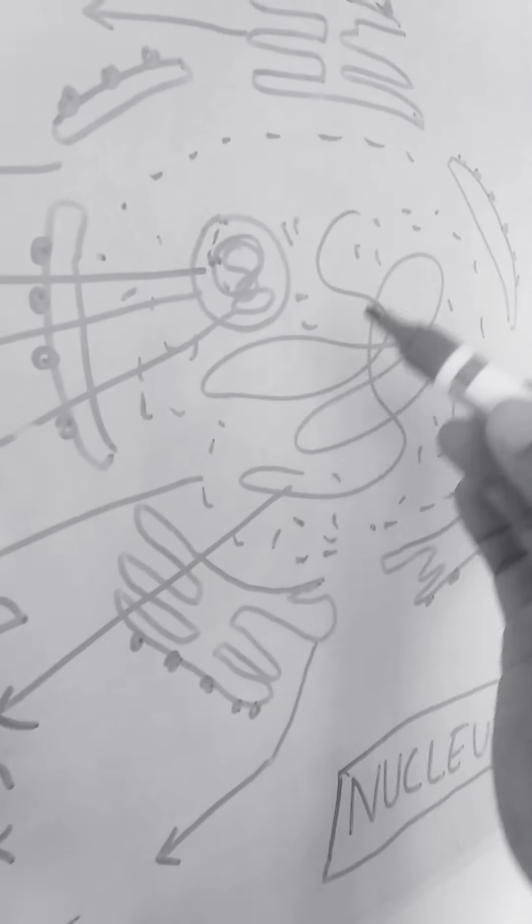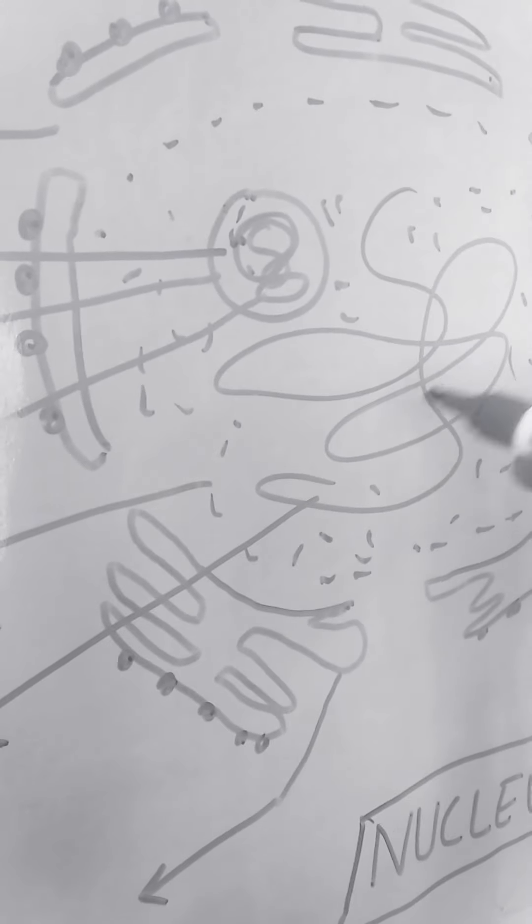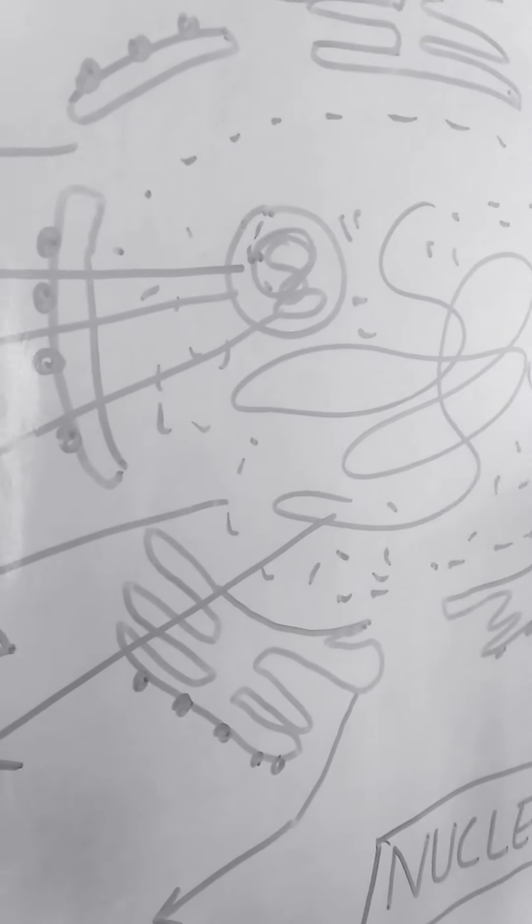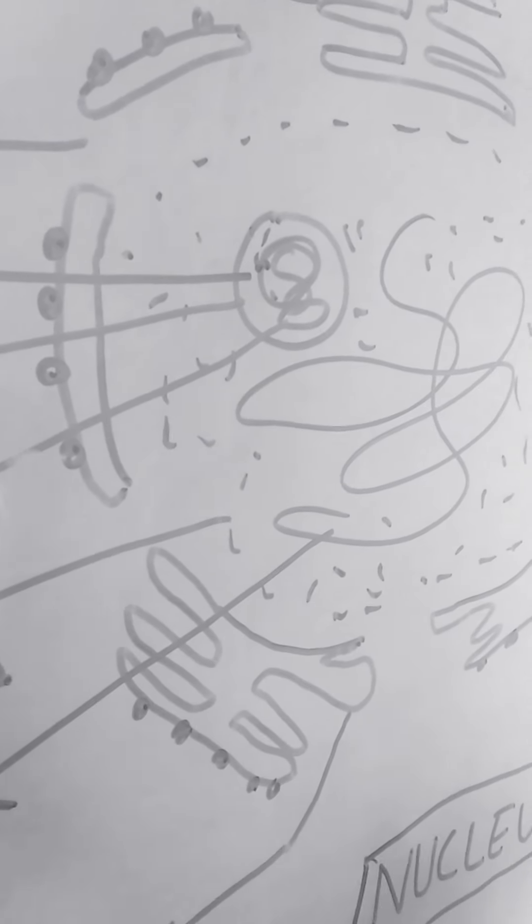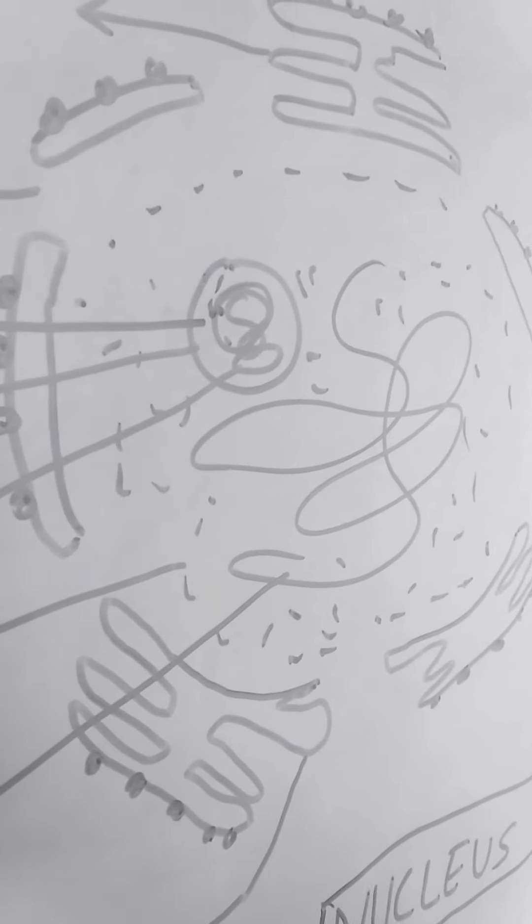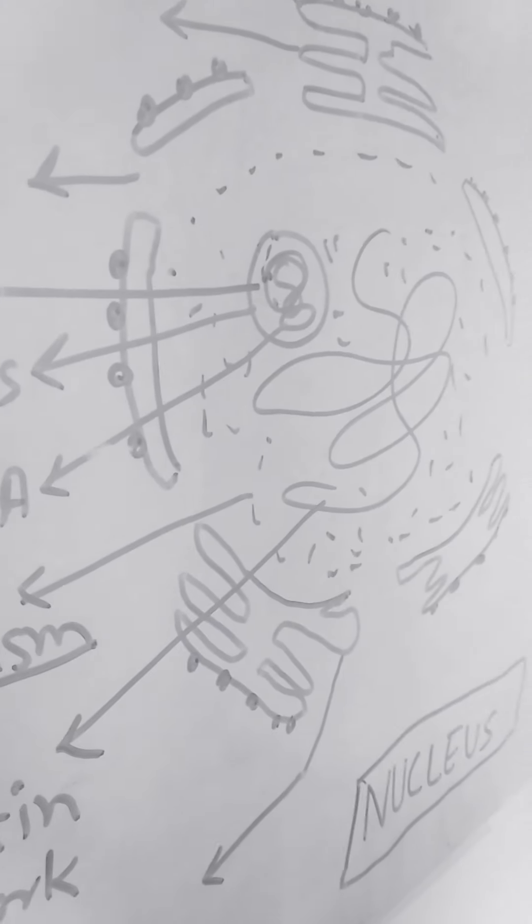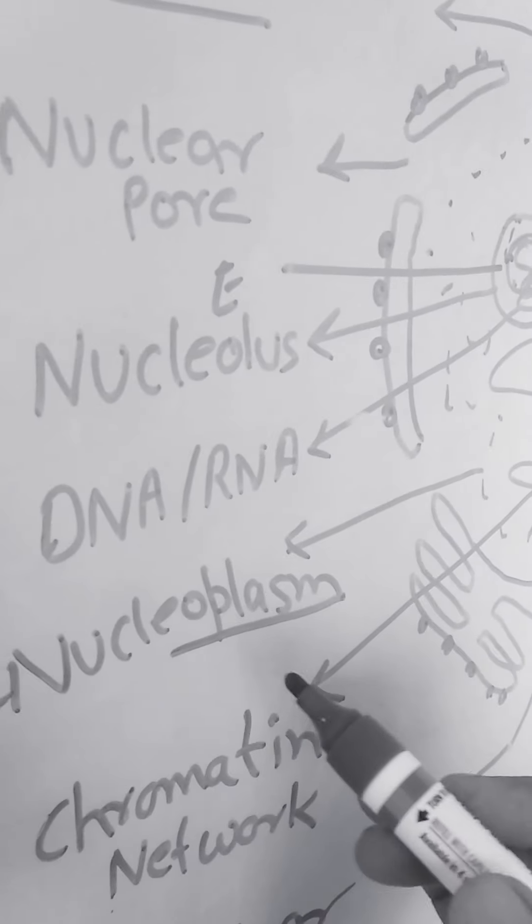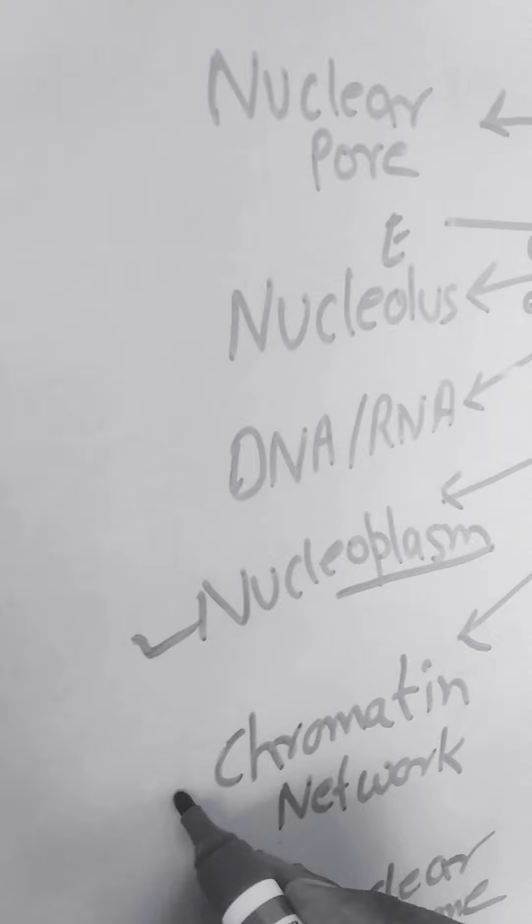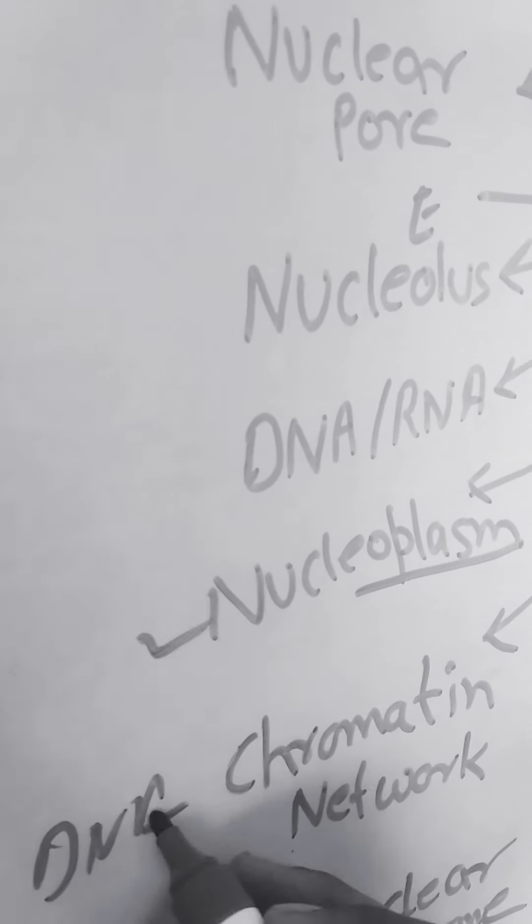Next one is chromatin network. This chromatin network is arranged in very condensed form before cell division, before nucleus division. But during the time of cell division, it becomes straightened and helps in formation of DNA, RNA, and proteins.